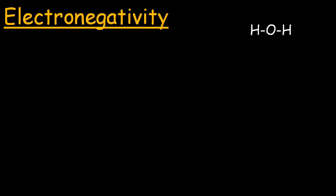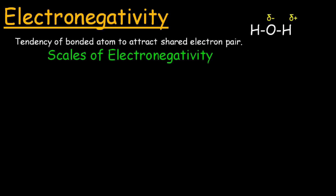Now let's talk about electronegativity. It is the tendency of bonded atoms to attract the shared electron pairs. Consider covalent molecules formed between two different atoms, such as the water molecule which has two hydrogen atoms and one oxygen atom. The oxygen atom attracts the shared electron pair towards itself, making itself partially negatively charged while hydrogen becomes partially positively charged. This behavior of atoms to attract shared electron pairs towards themselves unequally in a bond is known as electronegativity.